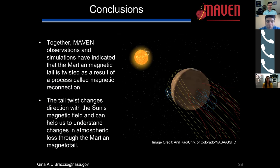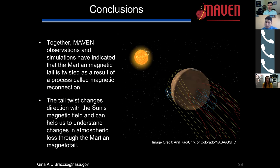In conclusion, we've used MAVEN observations and simulations indicating that the Martian magnetic tail is twisted as a result of magnetic reconnection. We find that this tail twist changes direction with the sun's magnetic field and can help us understand atmospheric loss through the Martian magnetotail. This is an initial study with one to two years of MAVEN data, but we've since roughly doubled the amount of data. I intend to perform an even larger statistical study to see if the Martian crustal fields have an impact on this twist, and how that twist changes with distance from the planet.